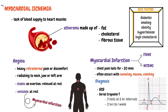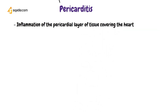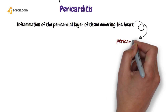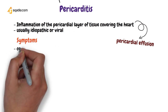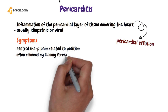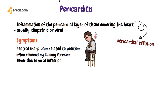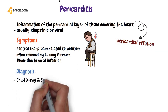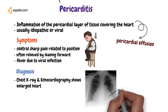The last cardiac cause of chest pain we'll discuss is pericarditis, in which there is inflammation of the pericardium that covers the heart. This can also lead to a build-up of extra fluid in the pericardial space, known as pericardial effusion. Pericarditis is usually either idiopathic or due to a viral infection. The sharp chest pain is related to position and is characteristically relieved when leaning forward. If viral infection is the cause, the patient will also present with fever. Pericarditis can be diagnosed with a chest X-ray or echocardiography, which reveals an enlarged heart — classically known as the water bottle sign on chest X-ray.